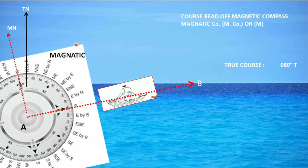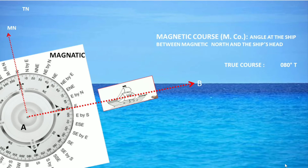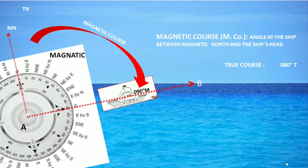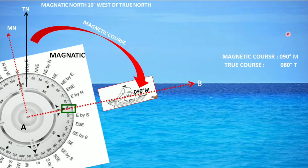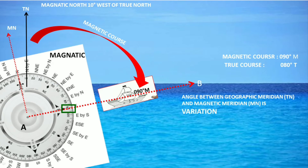Now the same thing, if it was being read with the magnetic compass, it would read a different reading. Here you can see it is reading 090 — so that would be your magnetic course. Magnetic course is measured from magnetic north to the ship's head, and the angle is 90 degrees.